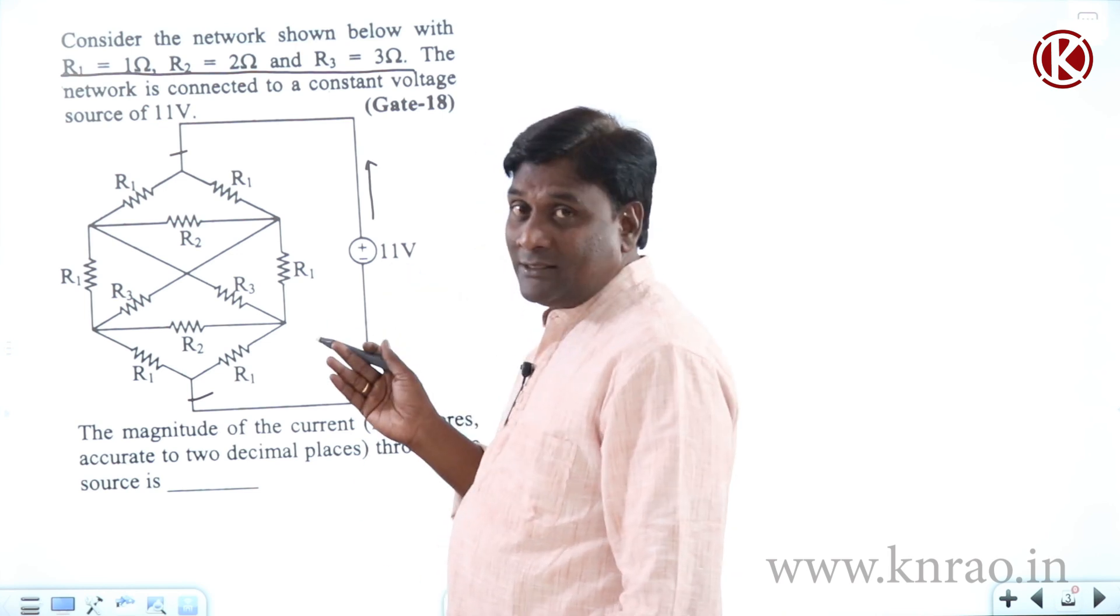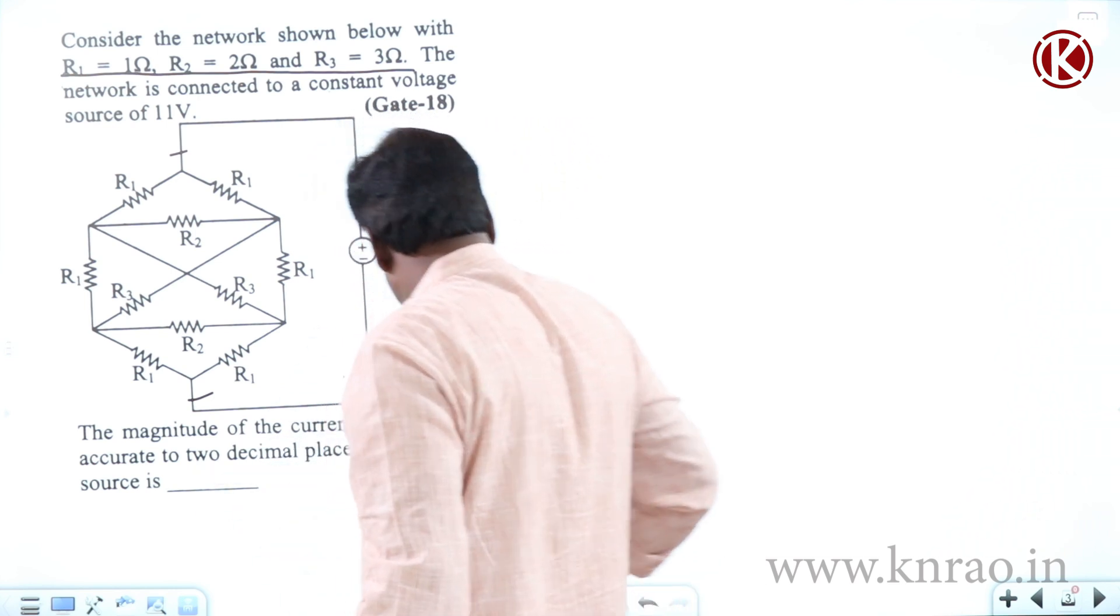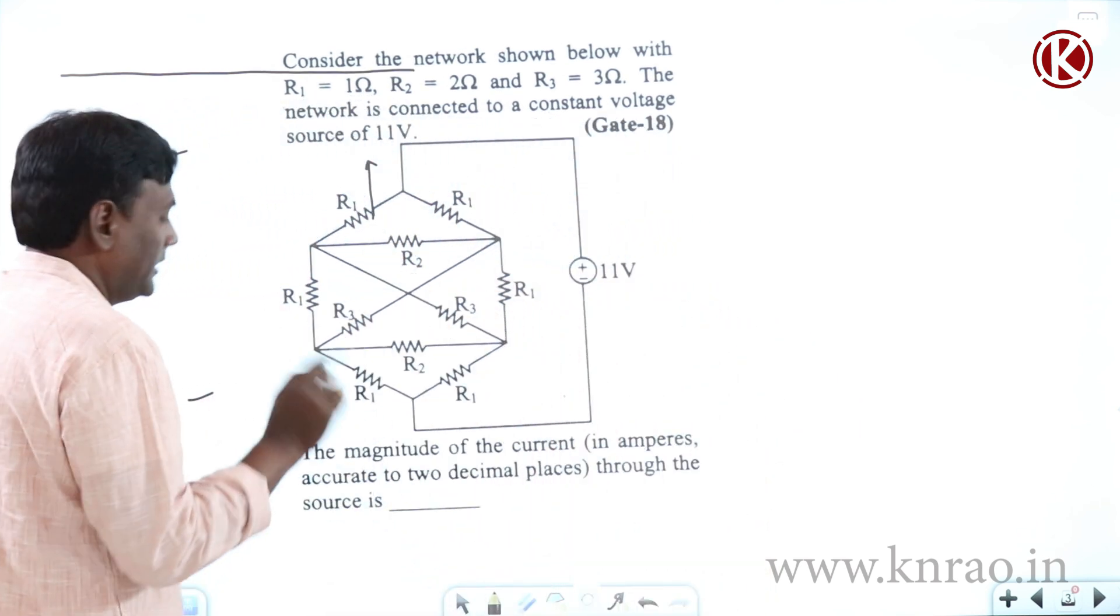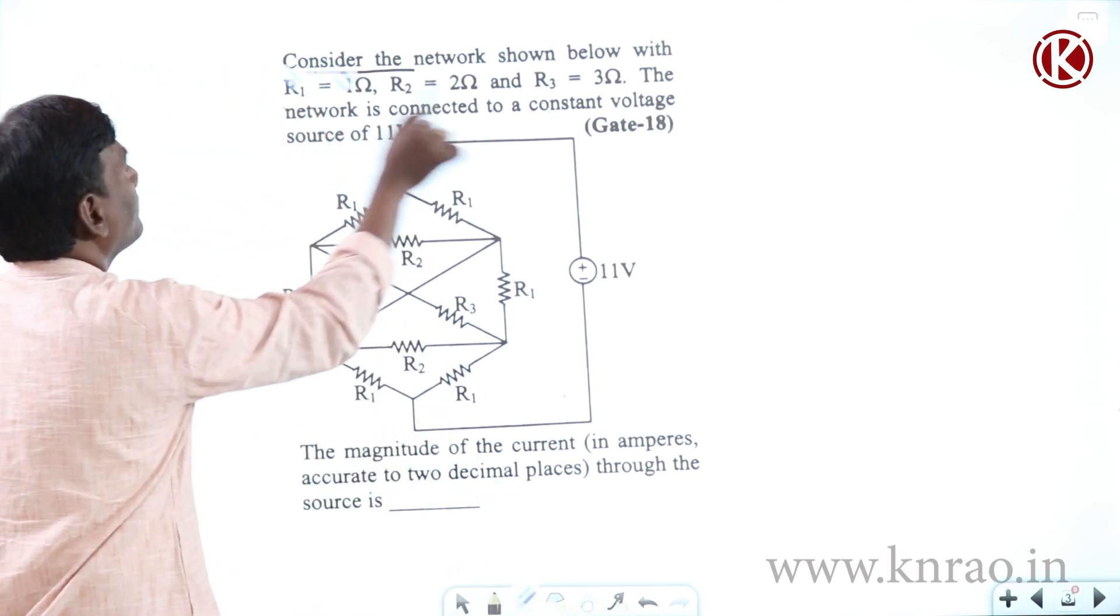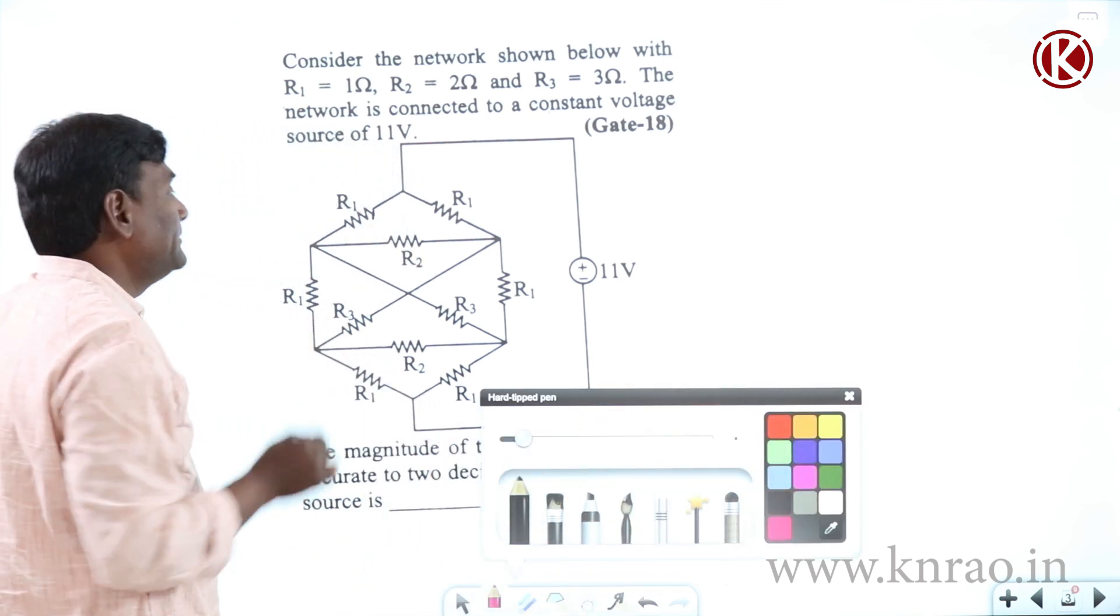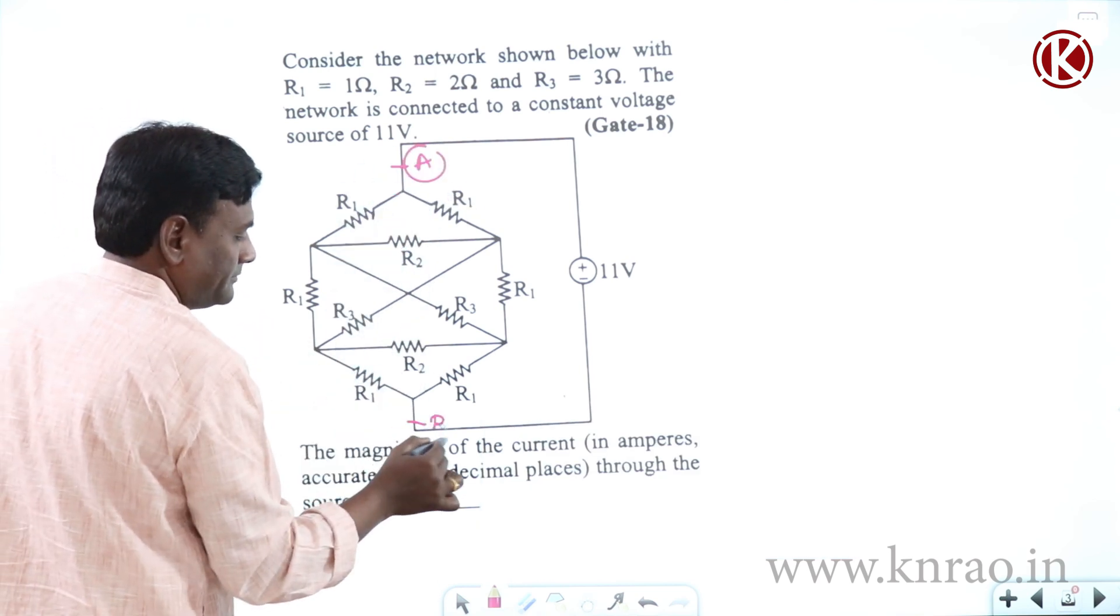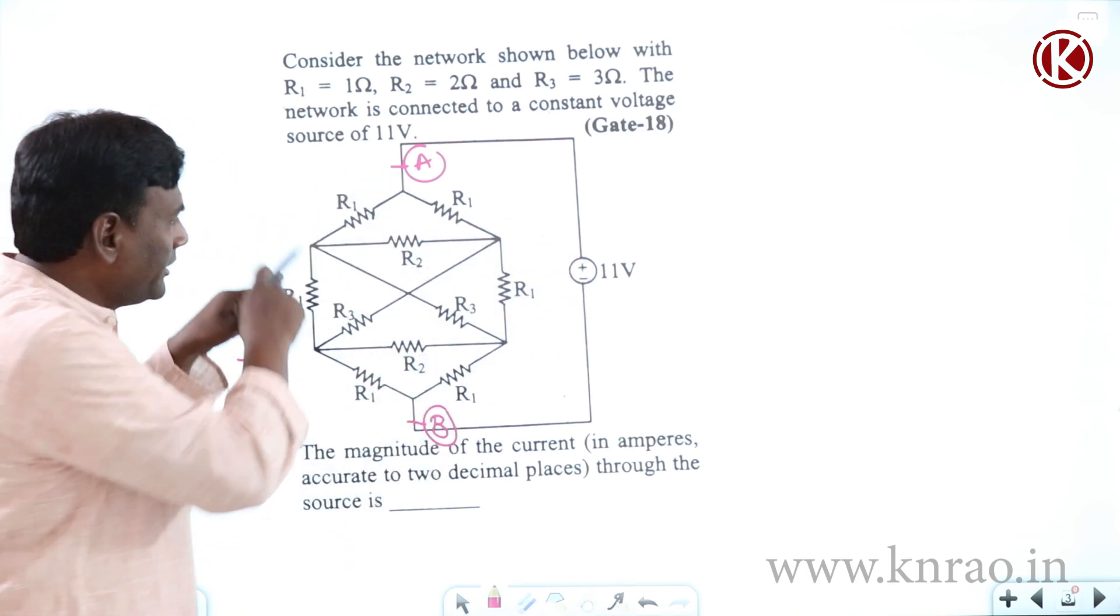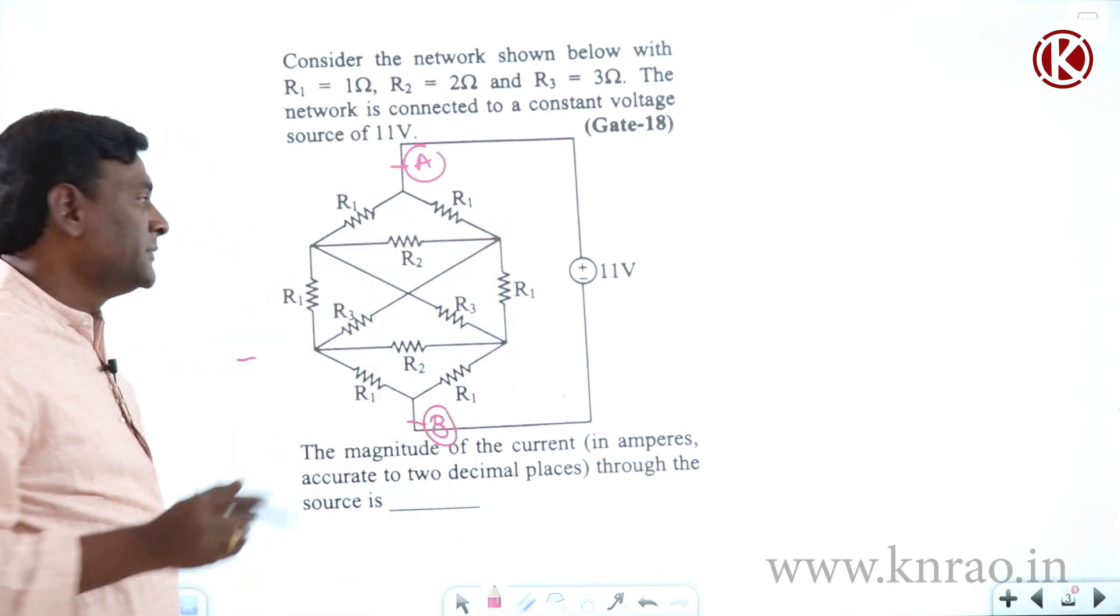Now, if you go ahead with voltage symmetry. Let me do here. If I do voltage symmetry, then see here. For example, let me take this. Now, this is A, for example, this is B. Now, with respect to this, see here, both are symmetric or not. R1, R1, in between R2, R1, R1, R1, R2, R3, R3, symmetric.